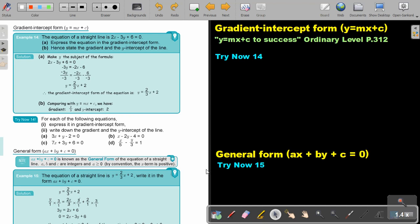And then, if the equation is in this form, the gradient-intercept form, I can see the gradient and I can see the y-intercept. And that's very... Hence, state the gradient and the y-intercept. So, the gradient will be 2 over 3 and the y-intercept will be 2.